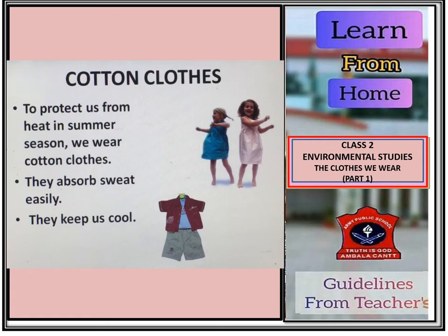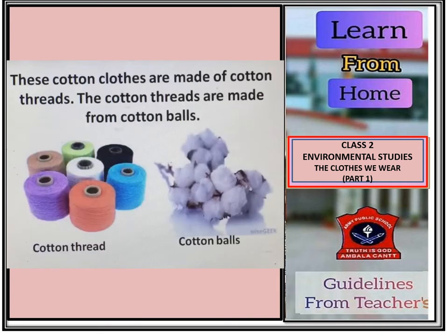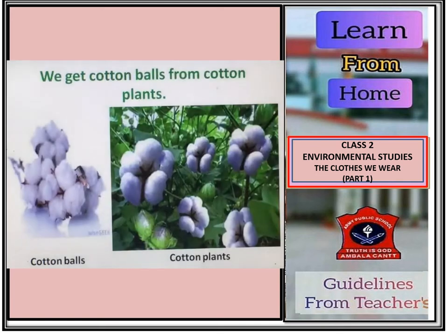Why do we wear cotton clothes? Because they absorb sweat very easily and they help us to keep cool. These cotton clothes are made of cotton threads. The cotton threads are made from cotton balls. We get cotton balls from cotton plants. This cotton is spun to make cotton threads, which are then woven by the weaver to make cotton clothes.